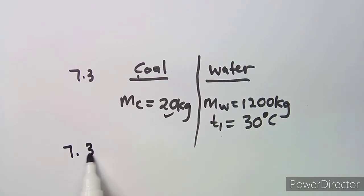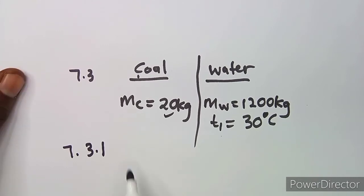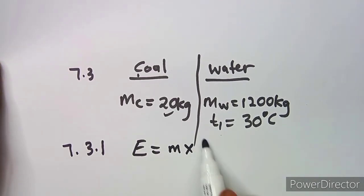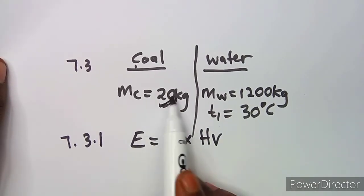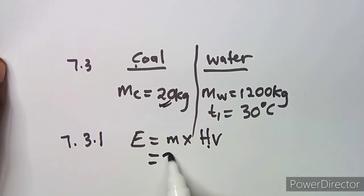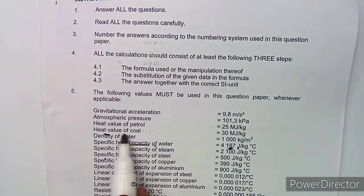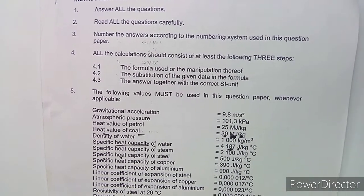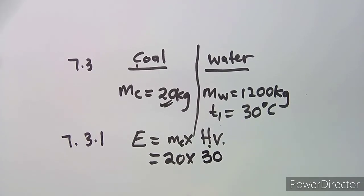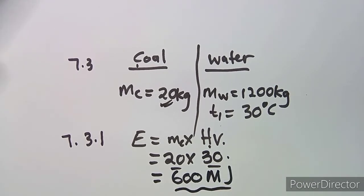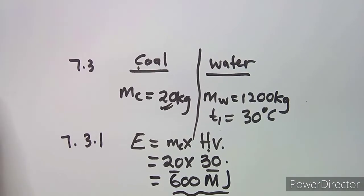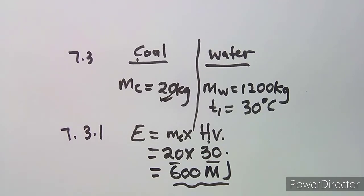For question 7.3.1, calculate the amount of heat released by the coal. We only have the mass of coal, so we use the formula Q = m × heat value. The heat value of coal is 30 megajoules per kg. So Q = 20 × 30 = 600 megajoules. That is the heat released by the coal.